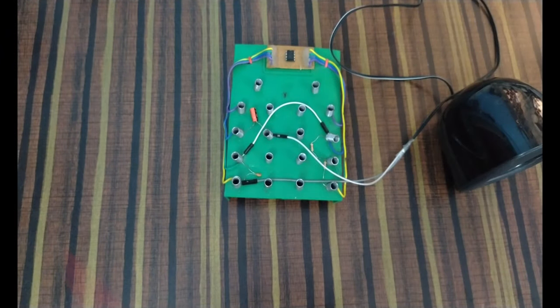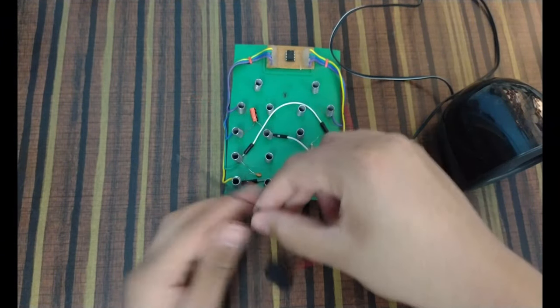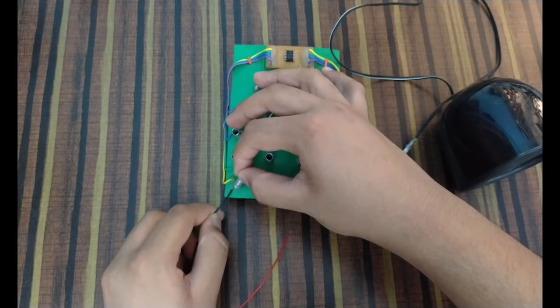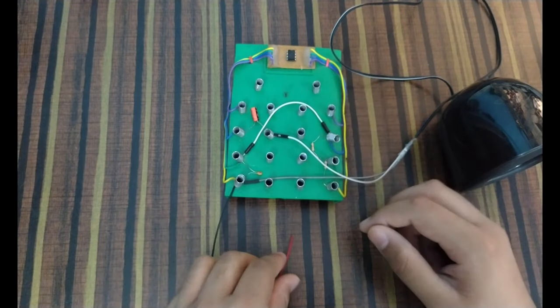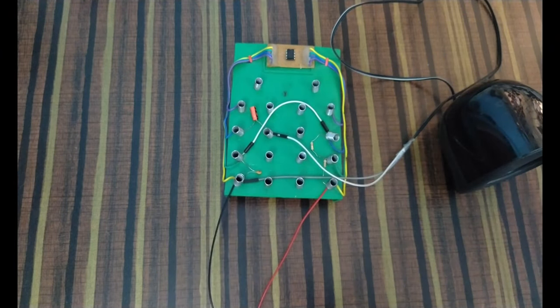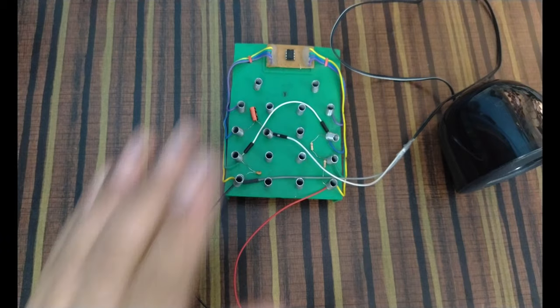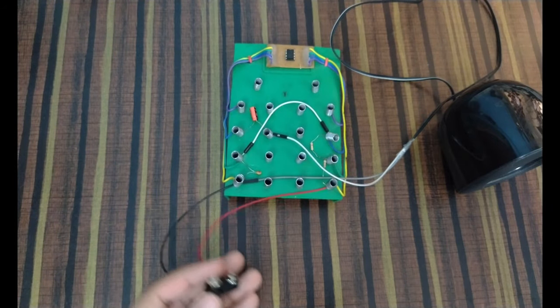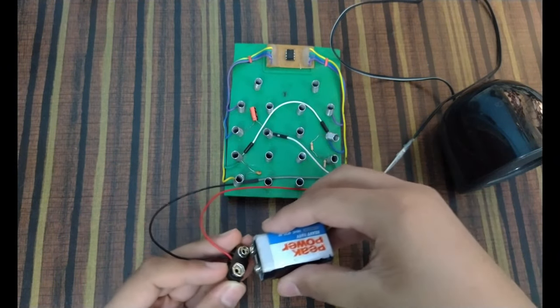Now connect the negative terminal of your battery cap in pin number 1 and the positive in pin number 8. Now it's time to test our circuit, so just connect your battery with the battery cap.